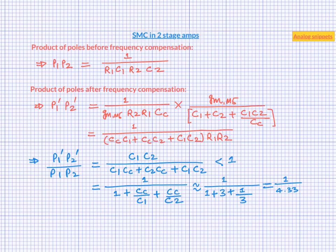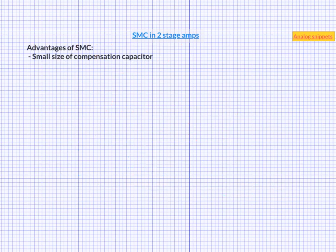Ok. So now let's summarize the simple Miller compensation. By far the biggest advantage of simple Miller compensation is the small size of compensation capacitor because of the Miller multiplication. Another advantage is that unlike dominant pole frequency compensation, there is no pole-zero doublet in the frequency response. This means a clean settling behavior.